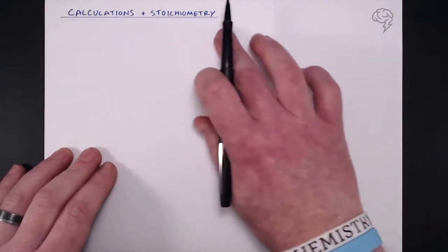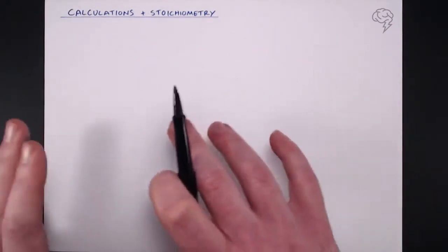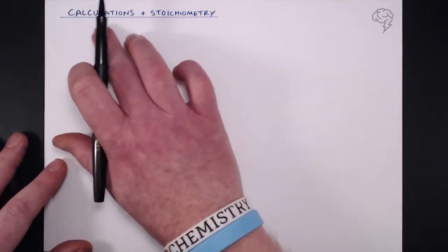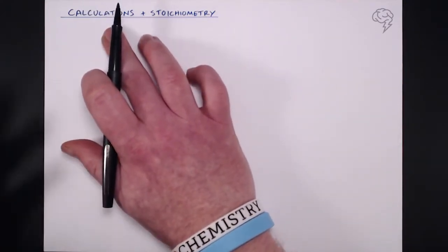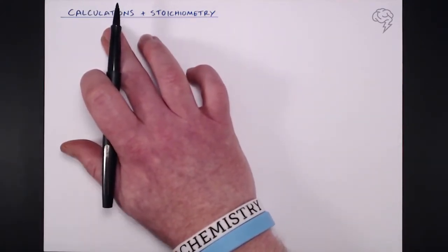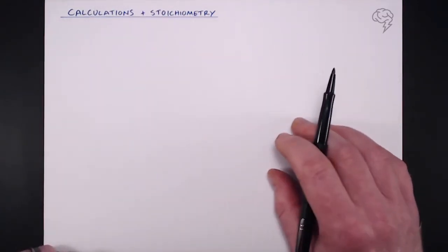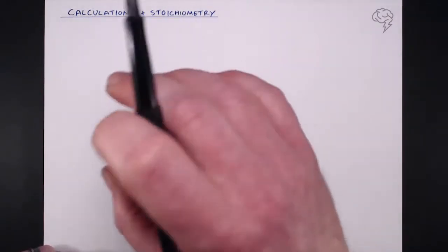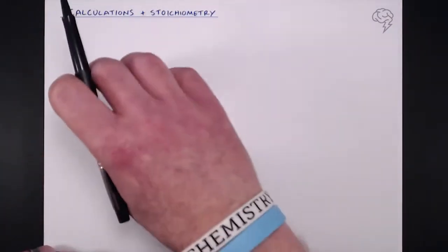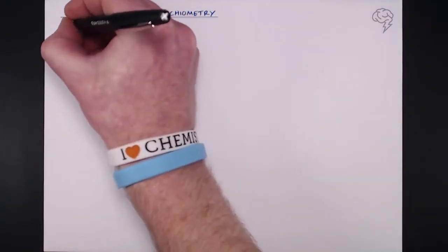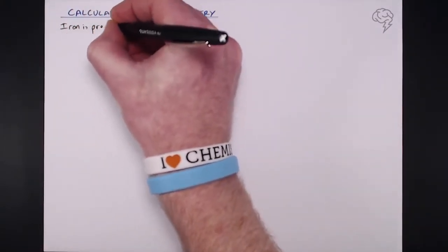What we're going to do in this tutorial is basically bring together the two major principles we've been discussing in the previous tutorials, which are the calculations involving number of moles — so mass over molar mass and concentration times volume — and of course the stoichiometry involved in balanced equations. I'm going to write out a question and talk you through how we go about using the calculations and the stoichiometry to solve that problem.